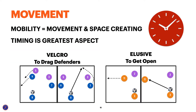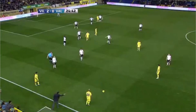Movement is also a key aspect to moving from the back to the middle to the final area. We'll refer to mobility as movement and space creating, and timing is the greatest aspect of our movements — are we too early, too late, or did we move at all? We must understand the cues of the player on the ball, the defenders, and our teammates to know when to move. Two types of movements: a Velcroing movement, where the blue nine runs away to drag a defender and opens space for the blue seven; and elusive movement, where a player like eleven moves wide to create open space for themselves.